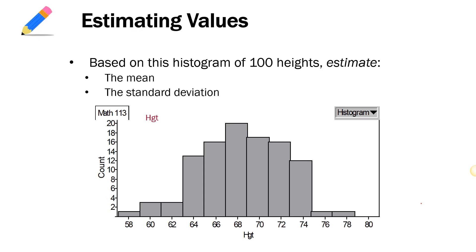Let's look at a more practical example. Here's a histogram of 100 adult heights, and we're going to use this histogram to estimate the mean and the standard deviation. Remember, the 95% rule can only be used if we have a bell-shaped symmetric distribution. If we have a skewed distribution, the rule does not apply. But in this case, this looks like a fairly bell-shaped symmetric distribution, so we can apply the rule.